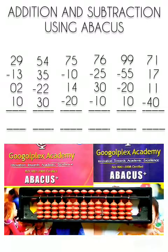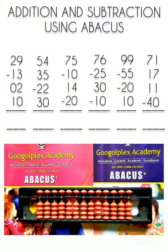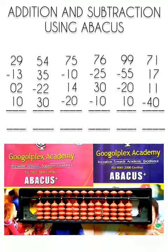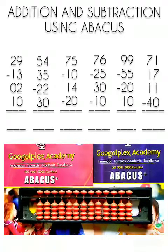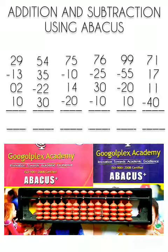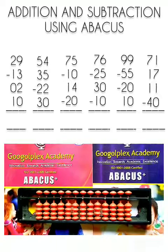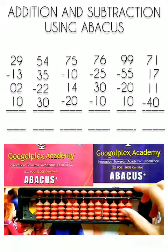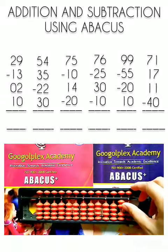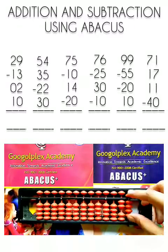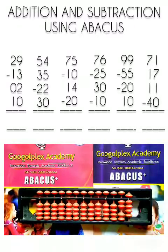Our first question is to solve 29 minus 13 plus 2 plus 10. The first number is 29. For 29, we have to raise 2 beads of the 10's rod and 9 beads of the 1's rod. Now this is 29.